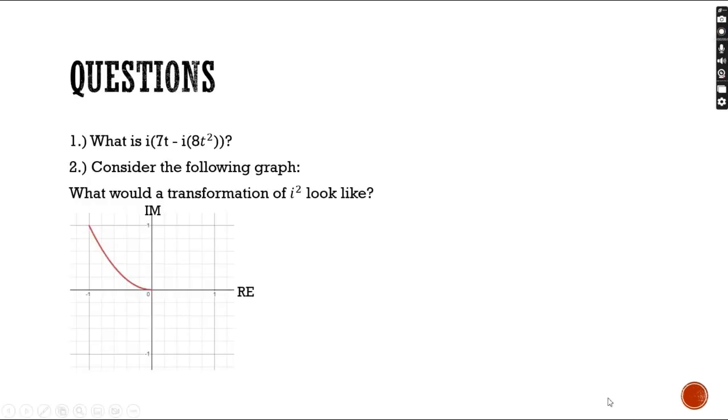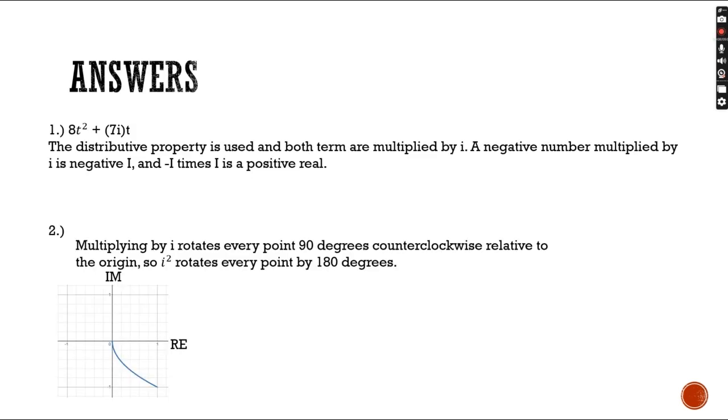Our first question is, what is i times the quantity of 7t minus 8t squared i? The answer to this question is 8t squared plus 7it. Just like we showed in the example 3 plus 4i, when you multiply by i, the equation is reversed because it is rotated by 90 degrees. Also, the distributive property is used and both terms are multiplied by i. A negative number multiplied by i is negative i, and negative i times i is a positive real number.